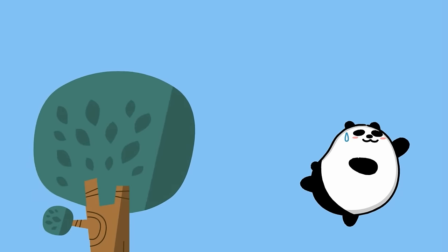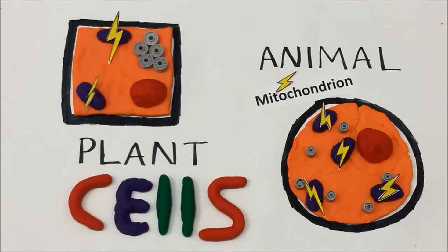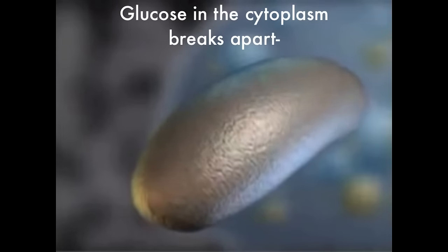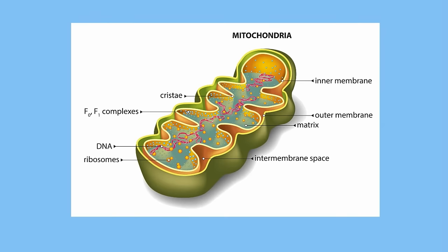In plants and animals, cellular respiration takes place at the mitochondria. Think of the mitochondria as a power plant for the cell, because the energy of the cell is generated at the mitochondria — just like these power plants and turbines in this video generate power for their city.